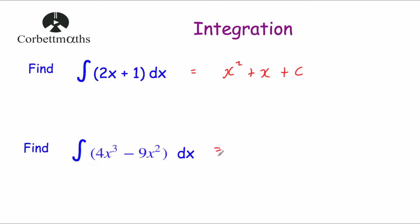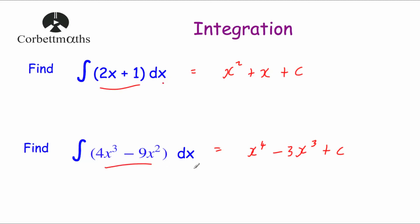Next: integrate 4x cubed minus 9x squared with respect to x. Starting with 4x cubed: increase the power to x to the power of 4, 4 divided by 4 is 1, so x to the power of 4. Then minus 9x squared: increase the power to x cubed, 9 divided by 3 is 3, so minus 3x cubed. And then plus c. So the answer is x to the power of 4 minus 3x cubed plus c. This notation, although it can look confusing, is just saying integrate this with respect to this letter.